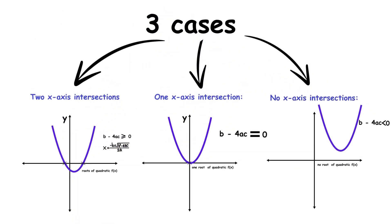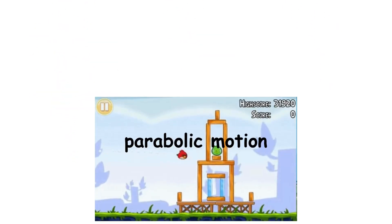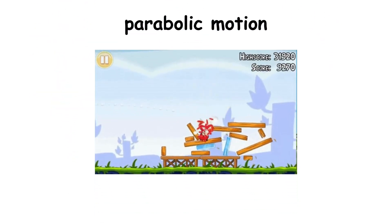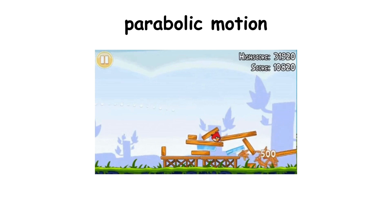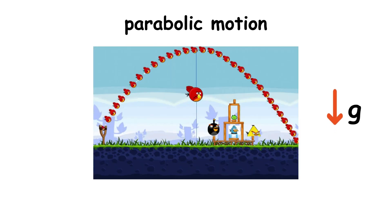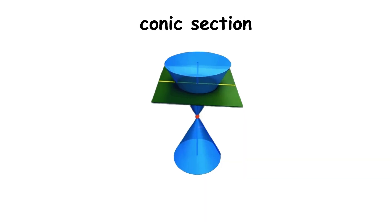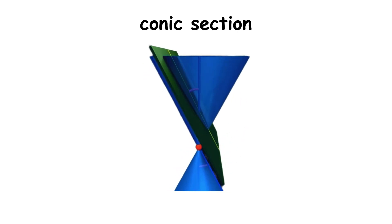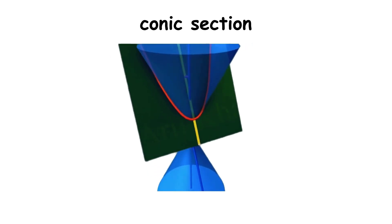Quadratics have many uses in modeling real-world phenomena. One of the simplest examples is parabolic motion: a projectile — an airborne object with no forces except gravity — traces out the shape of a parabola as it flies through the air. A parabola is an example of a conic section, which is roughly the intersection between an infinitely large cone and a plane slicing through it.